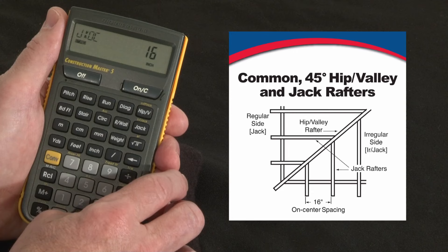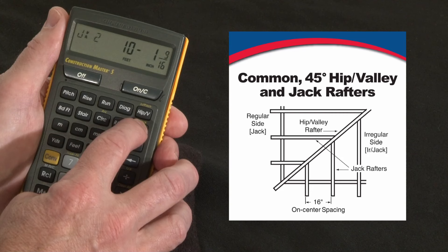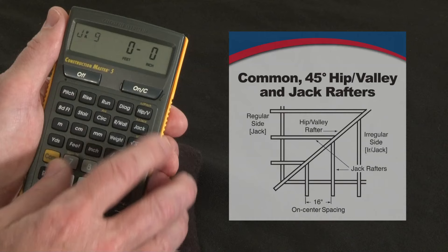And then jack rafters — the jack on-center spacing defaults to 16 inches, you can set it for whatever you want, but this is most commonly used. Each press of the jack rafter key will give me the length of each successive jack from the common on down to the corner: jack one, jack two, jack three, all the way down to the last one.